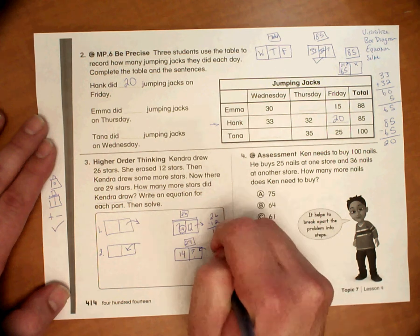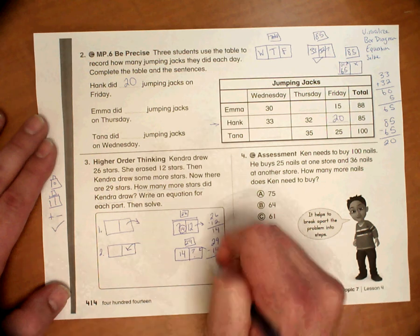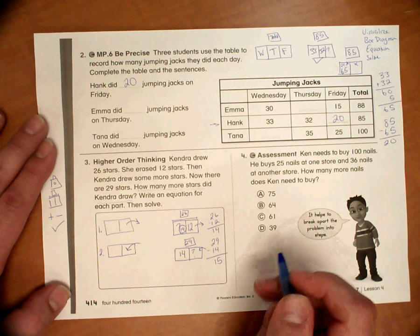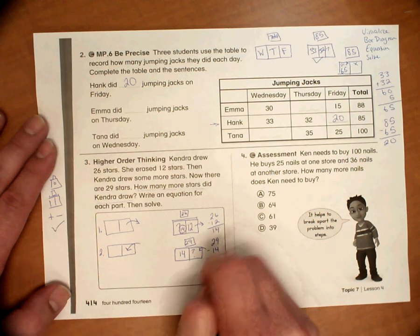Our equation is going to be 29 minus 14. And that is going to be 15. So she's going to draw 15 more stars.